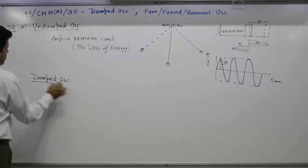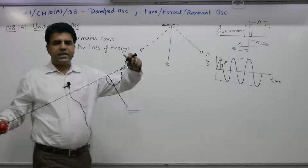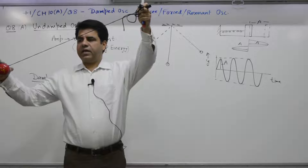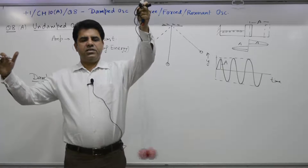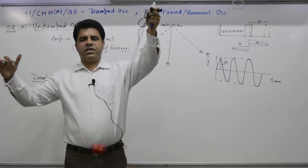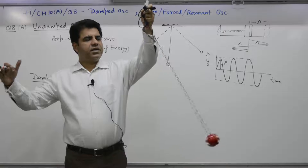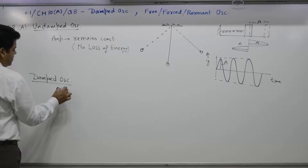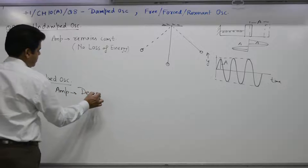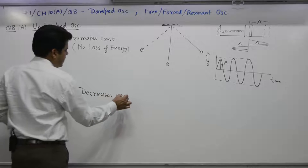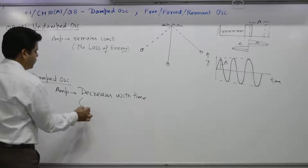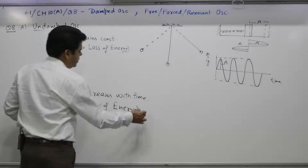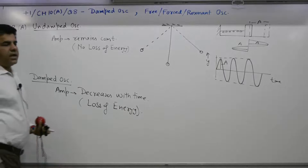Second part: damped oscillation. This is the practical case. In practice, you have some friction. If you release a pendulum from some angle, you can see its amplitude decreases with time. Why? Because there is a loss of energy. If amplitude decreases with time because of loss of energy, such an oscillation is known as damped oscillation.